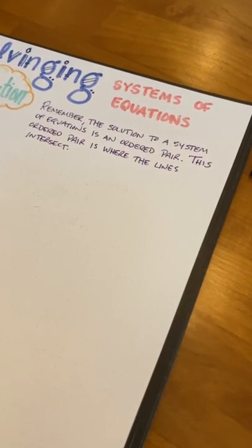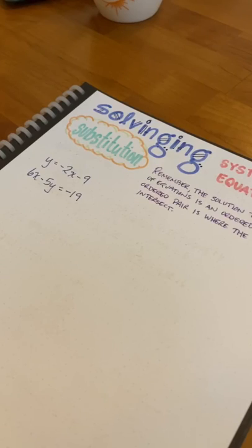Remember, the solution to a system of equations is an ordered pair. This ordered pair is where the lines intersect.